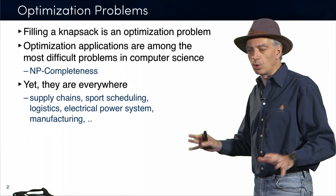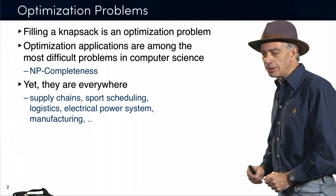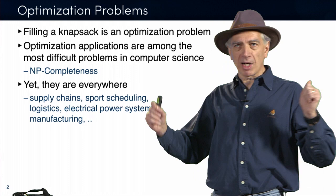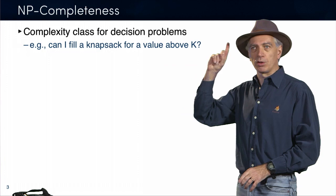Essentially these problems are everywhere. They are running the supply chains everywhere in the world. They are scheduling sport leagues — that's really important. They are scheduling logistic systems. A country like Australia spends 10 to 20% of its GDP just on logistics. They are basically running the electrical power system and many of the manufacturing firms all around the world.